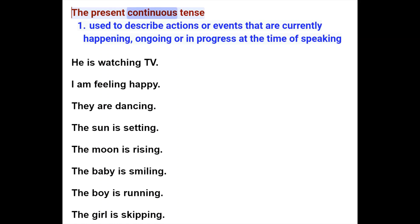The present continuous tense is used to describe actions or events that are currently happening, ongoing or in progress at the time of speaking.